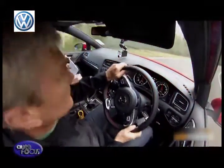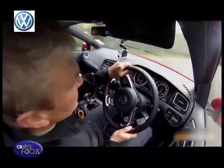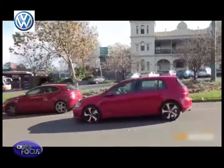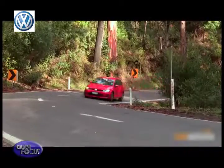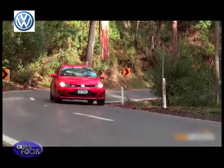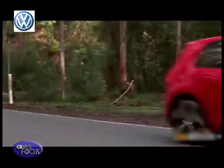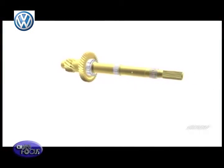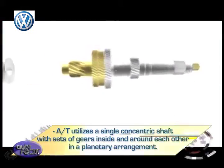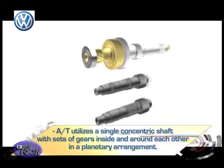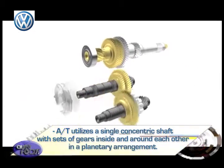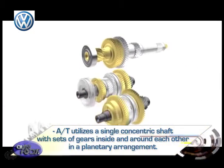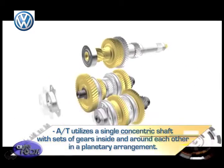With this, the gears are free from the need of a driver's direct input. How does the automatic transmission then decide which gear is needed and select that gear? Instead of gears on two parallel shafts, the automatic transmission utilizes a single concentric shaft with sets of gears inside and around each other in a planetary arrangement.